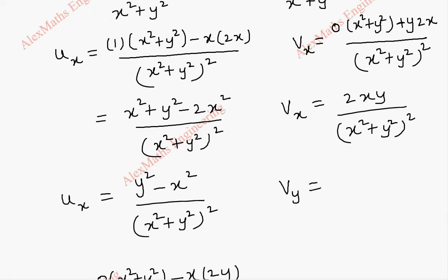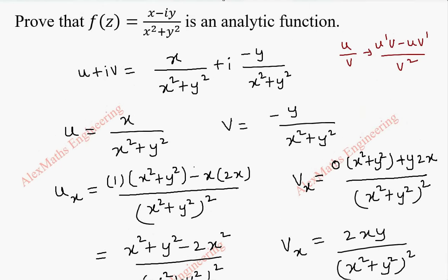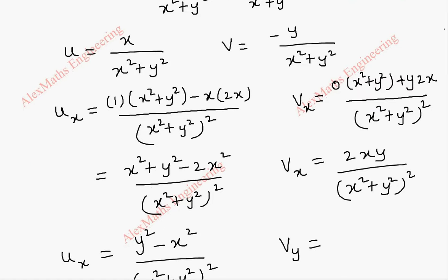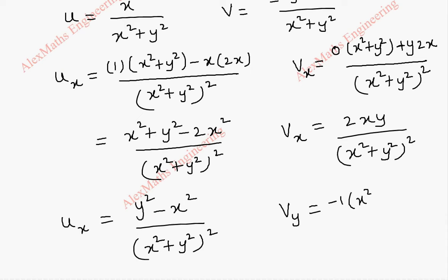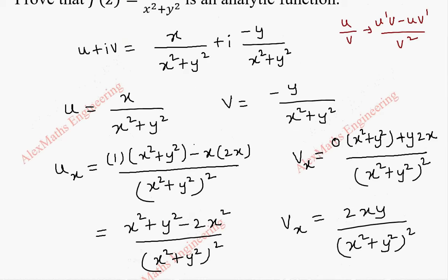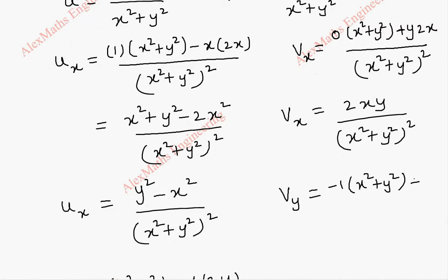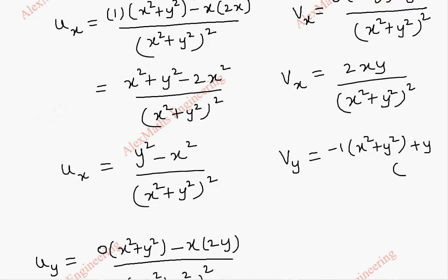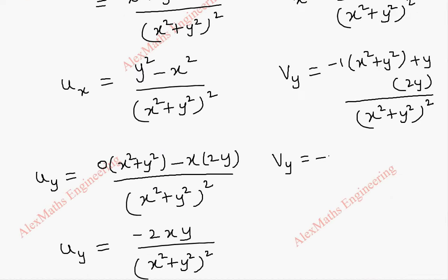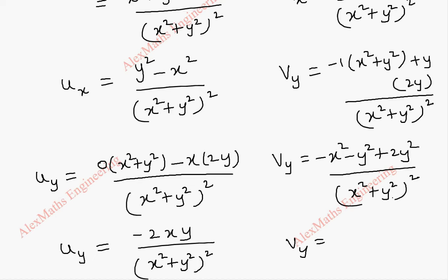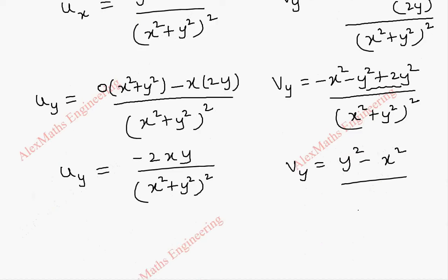In the same way, when we find vy, x is treated as a constant. u' is the differentiation of -y, which is -1, and v is (x² + y²) written as it is. Then minus uv', where u is -y and v' = 2y. This gives (-x² - y² + 2y²) / (x² + y²)², so vy = (y² - x²) / (x² + y²)².